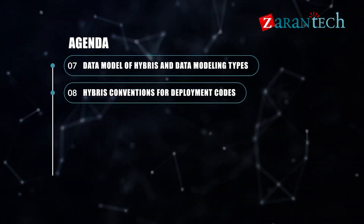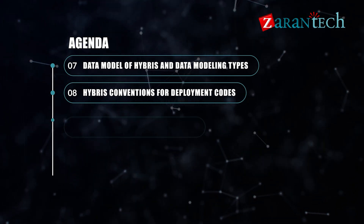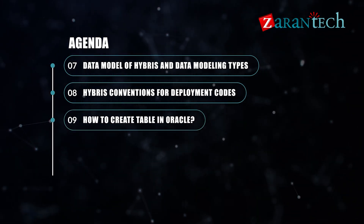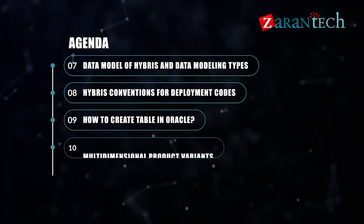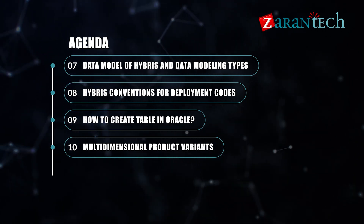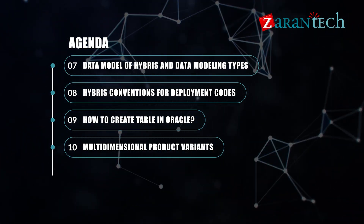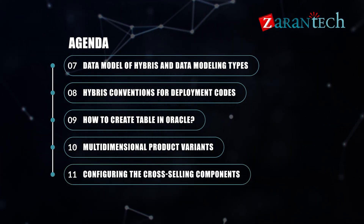Item 8: Hybris Conventions for Deployment Codes. Item 9: How to create a table in Oracle. Item 10: Multidimensional product variants. Item 11: Configuring the cross-selling components.